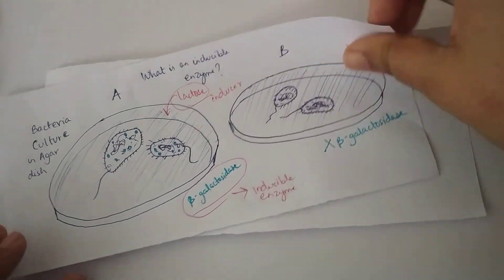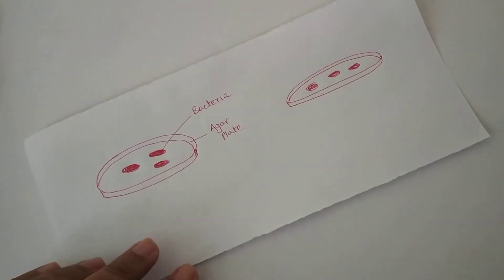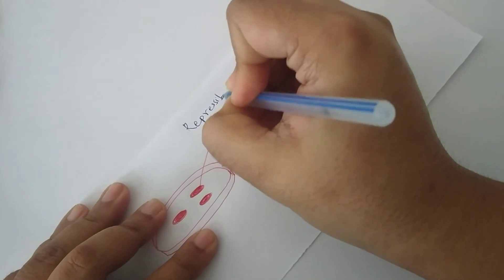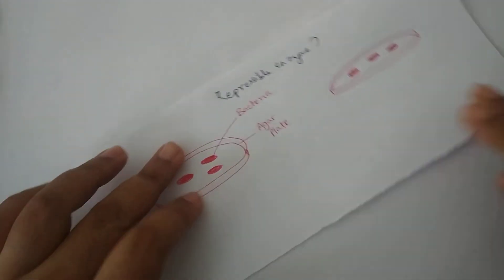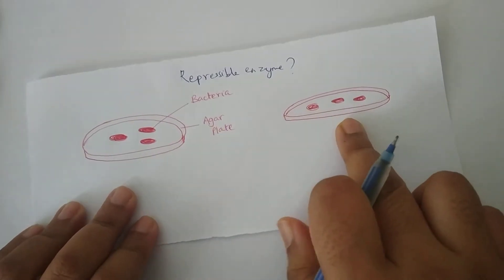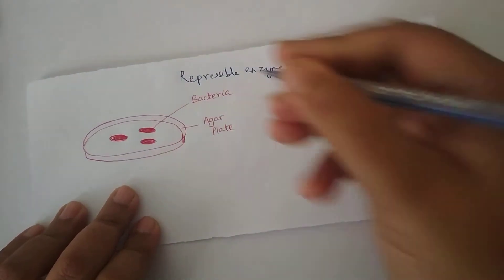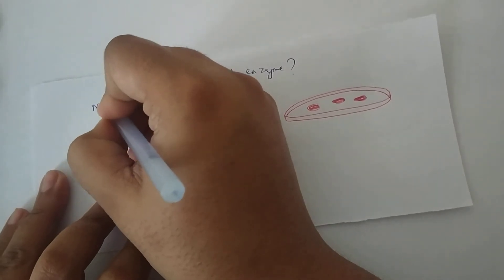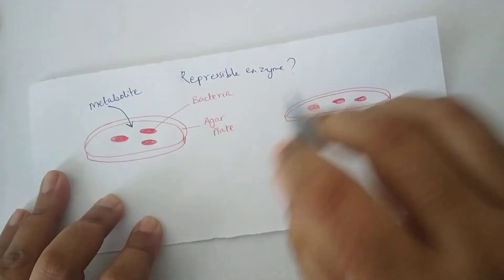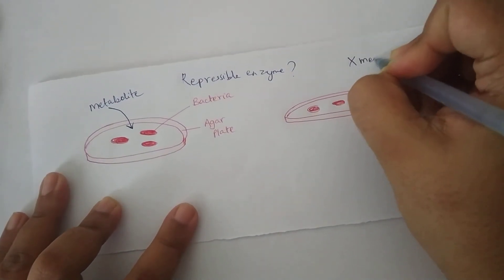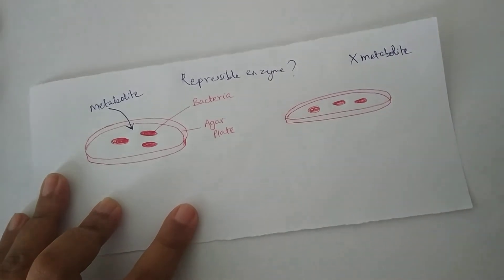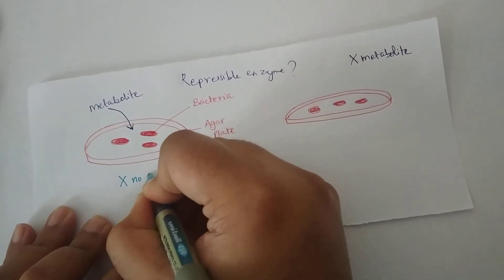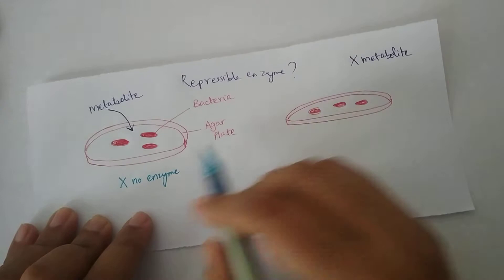With respect to this explanation if I explain what a repressible enzyme is. So in this case again we have two bacterial culture plates. Let's say in this plate I have added a metabolite or any substrate, something is added, and here the substrate is not added. The metabolite or the chemical molecule is not added. And I noticed that when the metabolite is added no enzyme is produced by the bacteria.